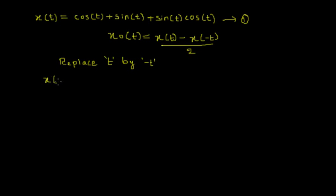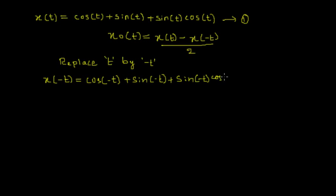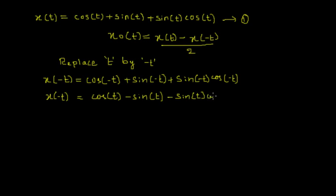Substituting -t into equation 1, I get x(-t) is equal to cosine(-t) plus sine(-t) times cosine(-t). Simplifying: cosine(-t) equals cosine(t), sine(-t) equals minus sine(t), and minus sine(t) times cosine(t) gives minus sine(t)·cosine(t). I call this equation 2.